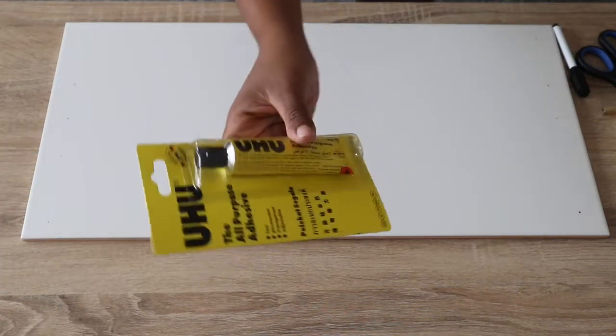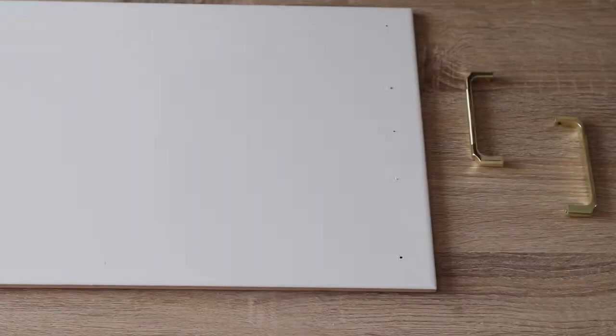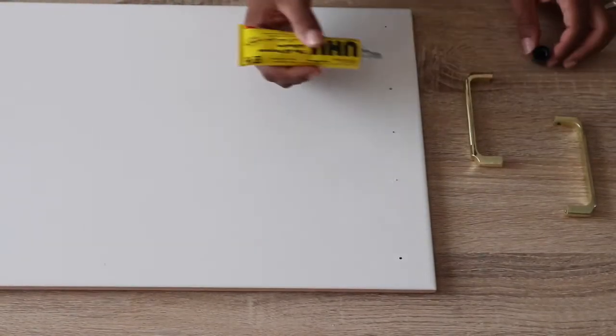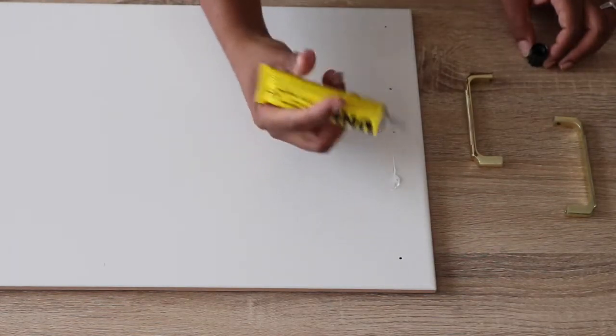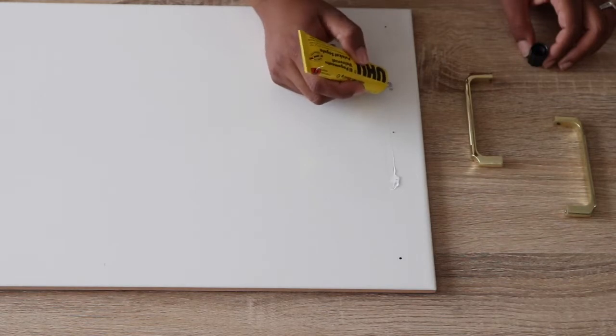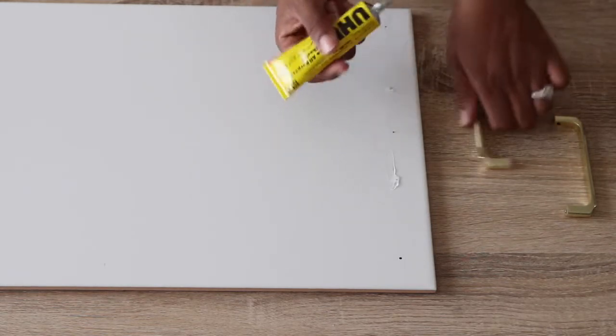So using my UHU adhesive, I just put a little bit of glue on the two dots for where the handle will stick. So remember we said the handle was 10 centimeters, so on the one side and the other side of the 10 centimeters. And that little dot in the middle just shows the halfway mark of the actual board, so that's what I used to make sure that it was in alignment.